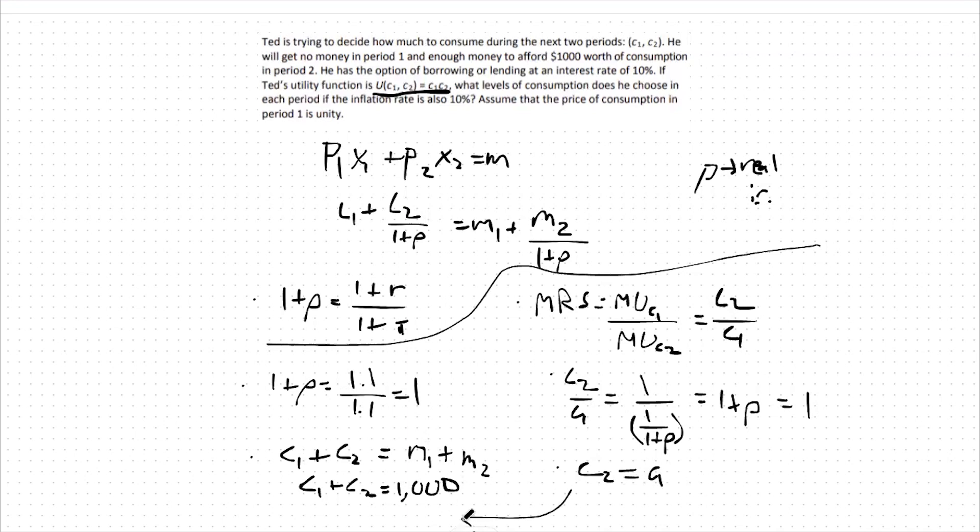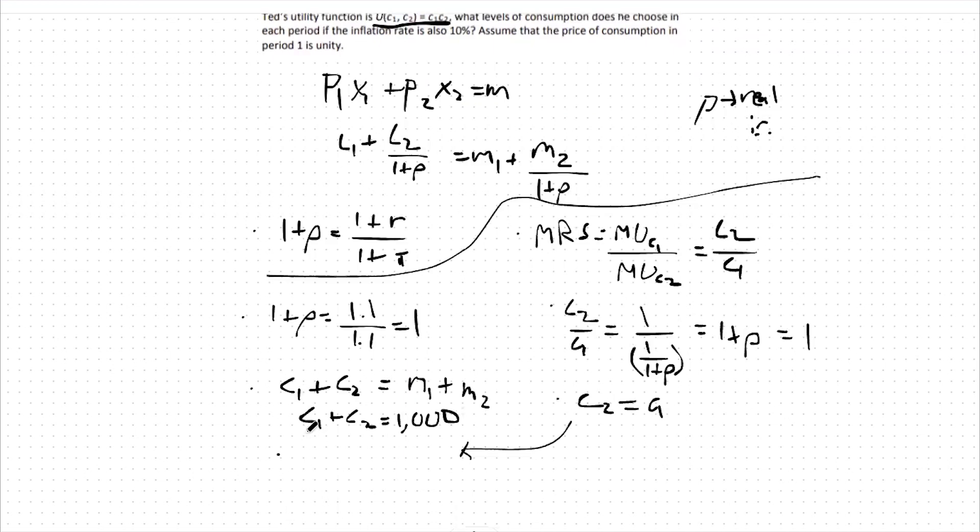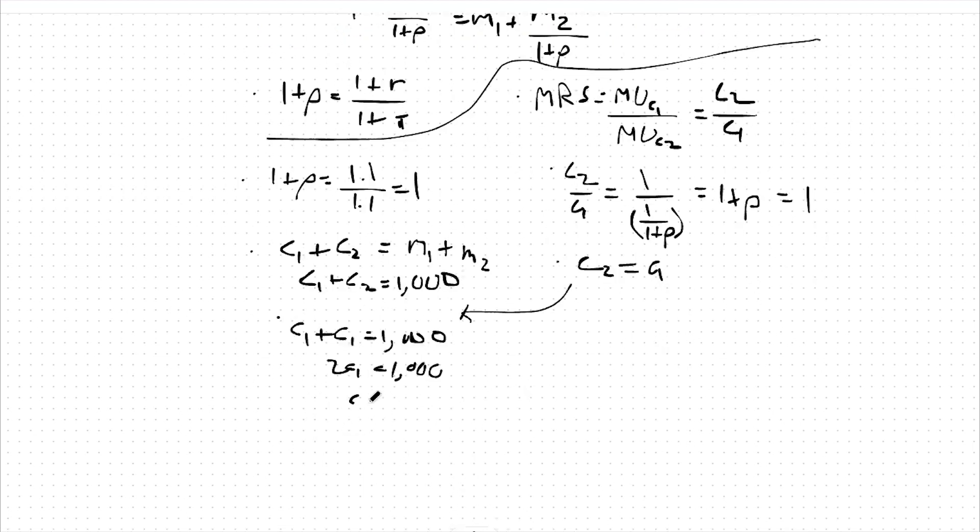Plugging back in here, we can find that c1 plus c1 then equals 1,000, so 2c1 equals 1,000, or c1 equals 500.